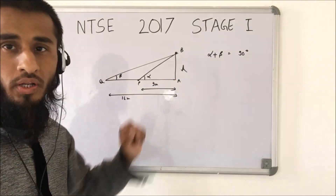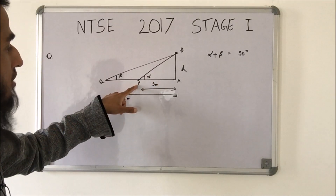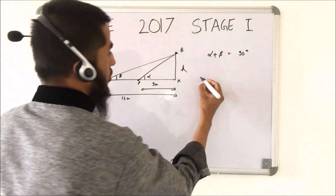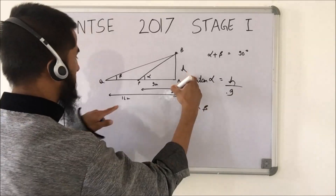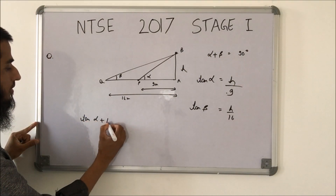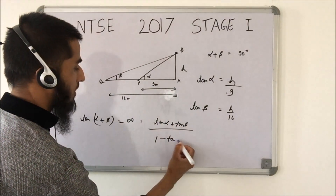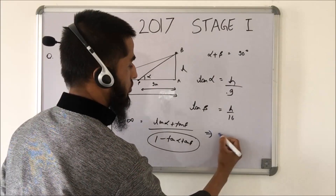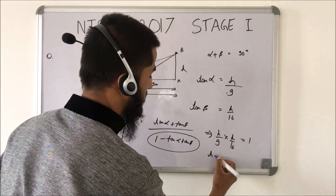A tower is given with two points where the angles of elevation from a point at distance 9 m and from point Q at distance 16 m are complementary. We need to find the height of the tower. tan α = h/9 and tan β = h/16. Since α + β = 90°, tan(α + β) is infinity, meaning the denominator 1 − tan α · tan β = 0, so tan α · tan β = 1. This gives h/9 · h/16 = 1, so h² = 144, and h = 12 metres.